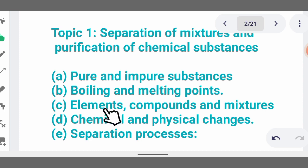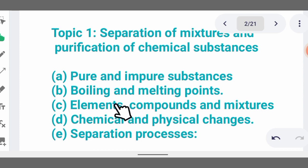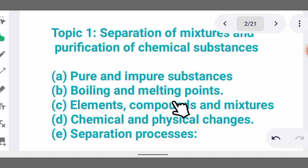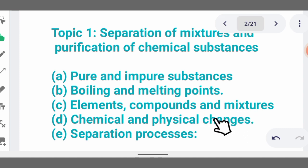Then we talk of elements, compounds, and mixtures. It is very necessary to understand the first 20 elements from hydrogen to calcium. Compounds are the combination of two or more substances chemically combined, while mixtures are the combination of two or more substances physically combined and can be separated by separation techniques.